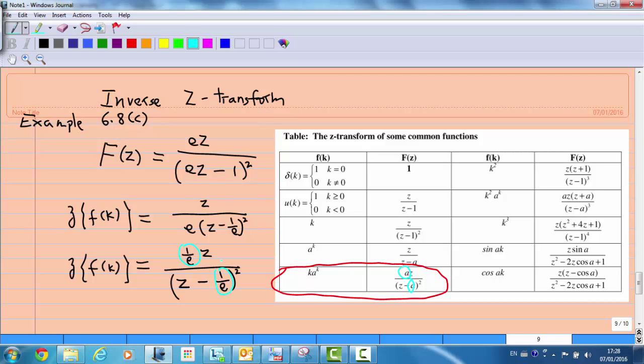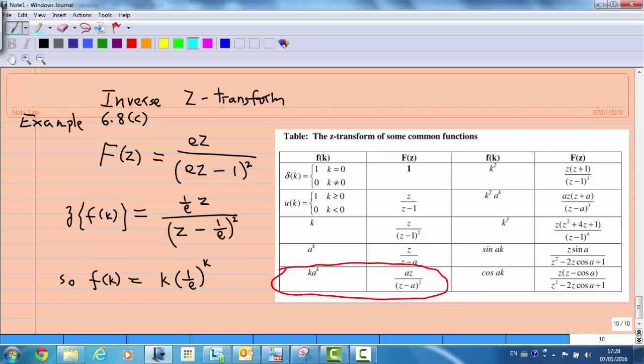Therefore, f(k) is equal to k times (1/e)^k. That is how we find the answer of the inverse transform using this table. We have the answer to the problem.